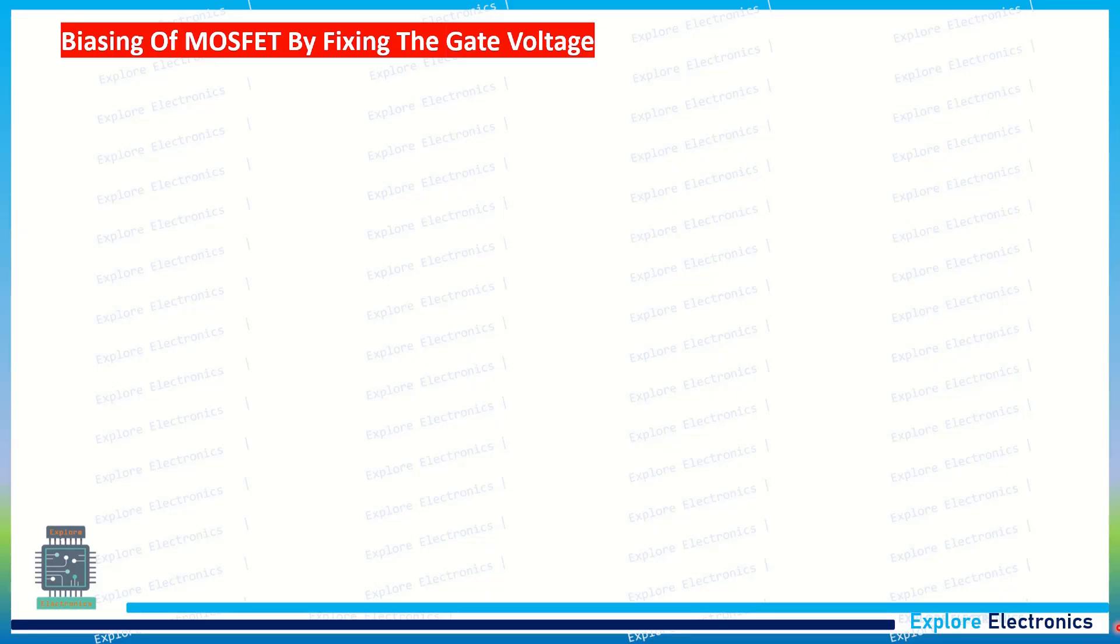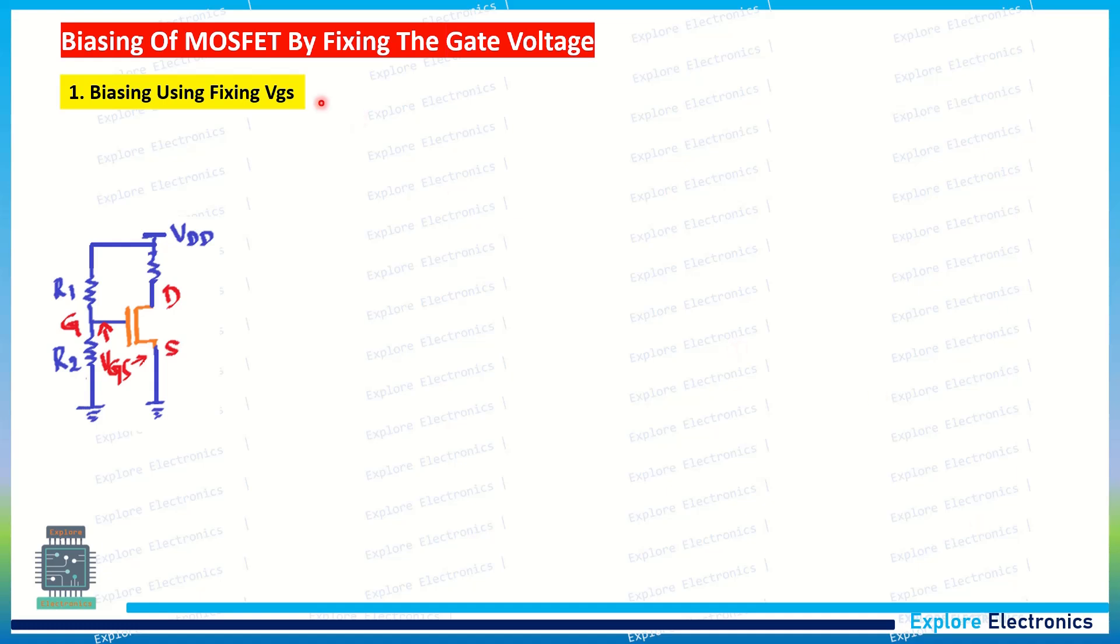Biasing of MOSFET by fixing the gate voltage has two methods. In the first one, biasing using fixing VGS, as the name itself says, we need to fix the voltage between gate and source of the MOSFET. The basic idea of MOSFET biasing is that we need to keep the MOSFET in saturation region. When we keep this in the saturation region, the MOSFET will work as an amplifier.